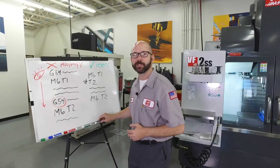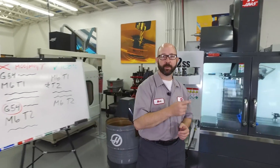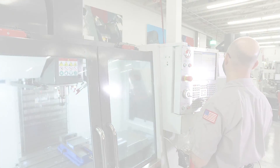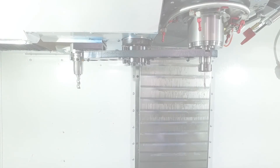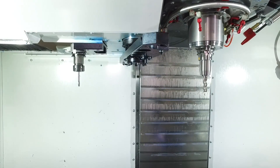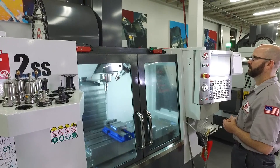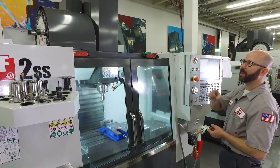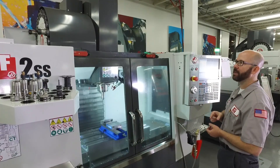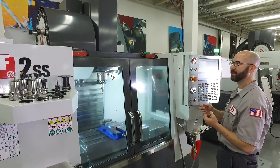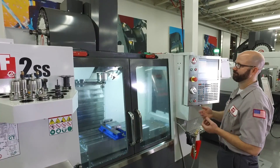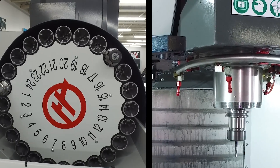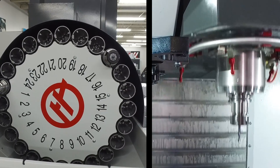Let me add those tool pre-calls to my program and we'll see how it runs. The tool in my spindle is down machining while my carousel has already gotten my next tool ready. Look at that — by the time my tool comes up, the next tool is ready and it's a very fast changeover.